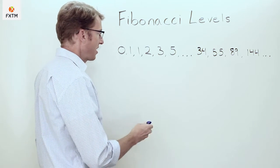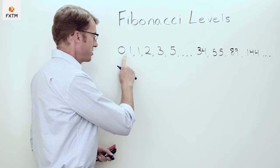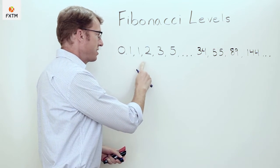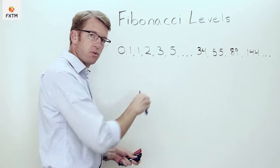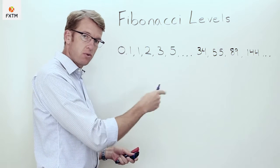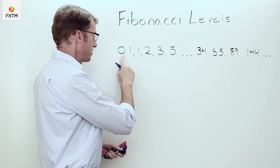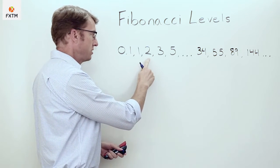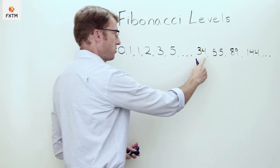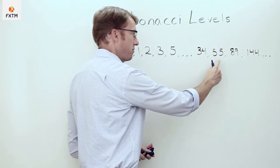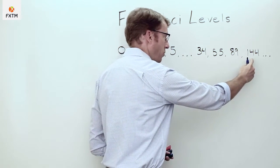These are based on the Fibonacci number series. As you can see here, each number in the series is equal to the sum of the previous two numbers. So we start at 0, 1, 1, 2, 3, 5, and so forth — 34, 55, 89, 144.